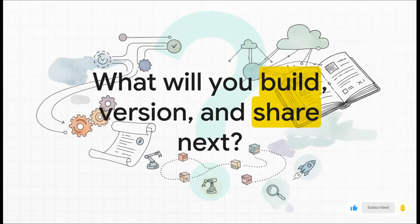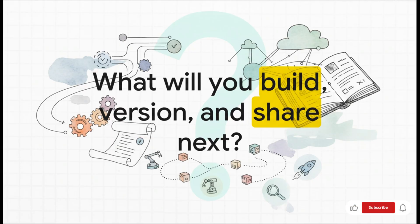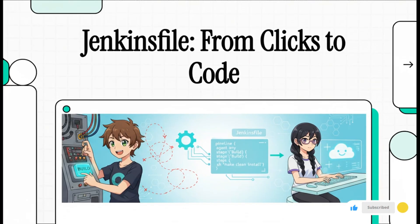By moving from clicks to code with the Jenkinsfile, you're fundamentally changing how you work. Your build process is no longer this fragile thing hidden in a UI — it's a first-class citizen in your repository. It's versionable, it's reviewable, it's reusable. You can apply all the same software engineering best practices to it that you do for your application code. So the real question is: now that you have this power, what are you going to build with it? We're diving into a huge shift in automation — getting your Jenkins builds out of the manual click-fest of the UI and into powerful, version-controlled code.